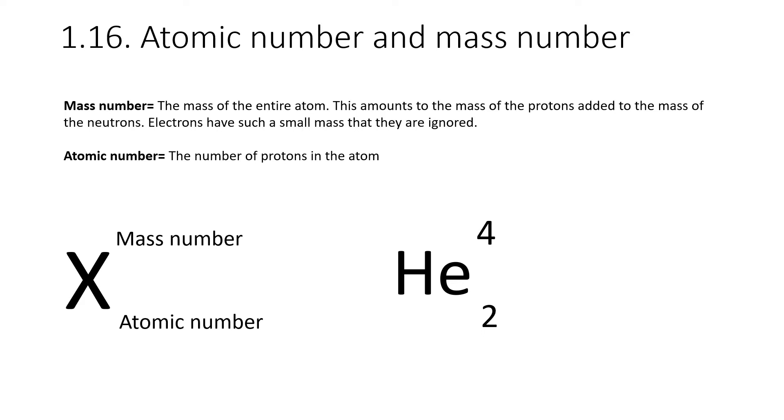For specification point 1.16, you need to know what atomic number and mass number mean. When we show elements, we almost always show them with a symbol. Over here, I've represented this with an X. That X indicates that it could be any element symbol. Above it you'll see its mass number, and below it you'll see its atomic number. The atomic number tells you the number of protons, and the number of protons determines what atom you actually have. Two protons means helium. One proton means hydrogen. Three protons means lithium, and so on. If you added a proton to a hydrogen atom, it would become a helium atom.